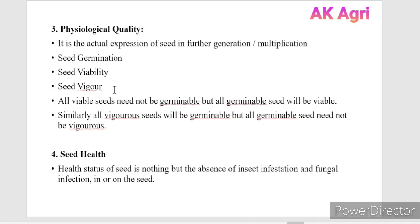Seed germination is the ability of the seed to produce a normal seedling with a proper shoot and root system under favorable conditions.